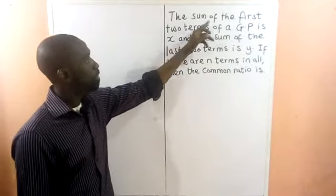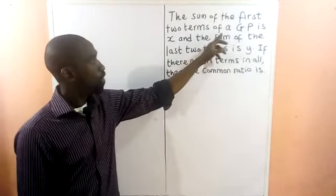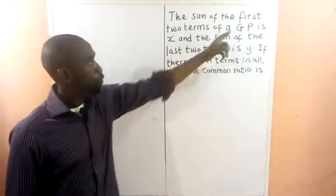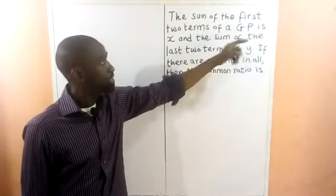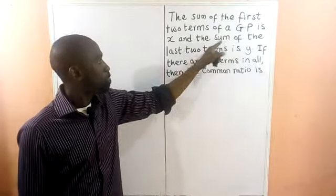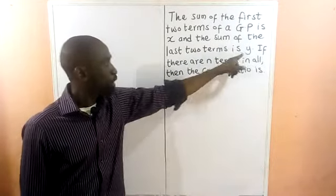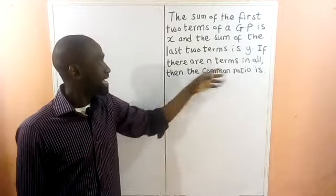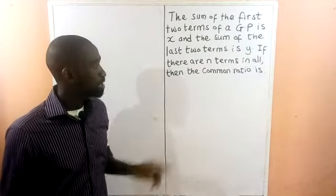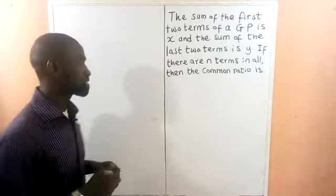The sum of the first two terms of a geometric progression (GP) is X, and the sum of the last two terms is Y. If there are N terms in all, we are required to find the common ratio.